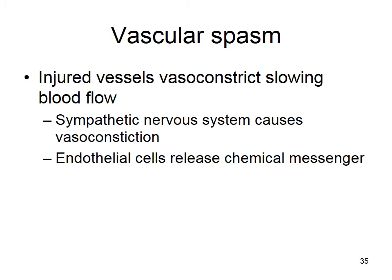The first and easiest step: an injured vessel vasoconstricts. The sympathetic nervous system can cause vasoconstriction of arterioles and veins, but also the endothelial cells lining your blood vessels — in response to being damaged — release a paracrine chemical messenger (one that just acts locally) that tells the smooth muscle lining that blood vessel to constrict. When you have vasoconstriction, that slows blood flow, and this happens almost immediately.